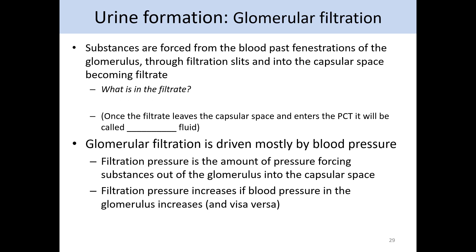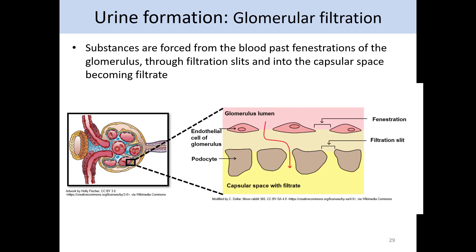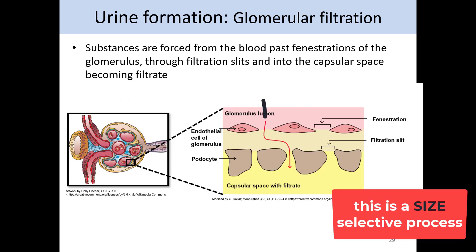The process of glomerular filtration requires substances to move past the fenestrations of the glomerulus and through the filtration slits of the podocytes into the capsular space, becoming filtrate.